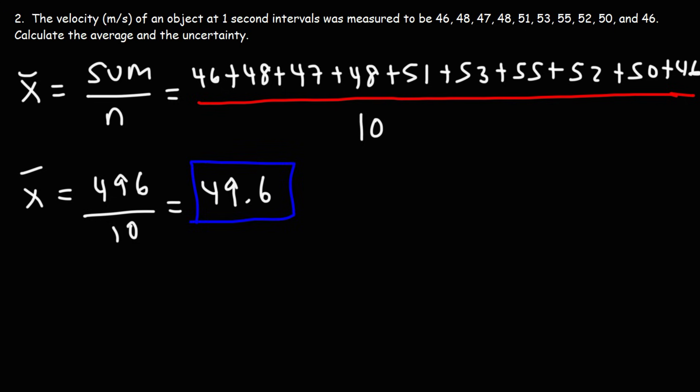Now let's calculate the uncertainty. The uncertainty is one half the range. And the range, the maximum, is 55. That's the highest number. Minus the lowest number, the minimum, is 46. 55 minus 46 divided by 2 is 4.5.